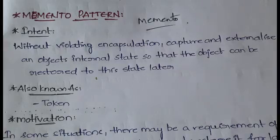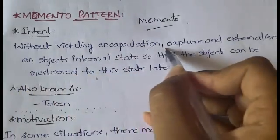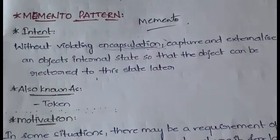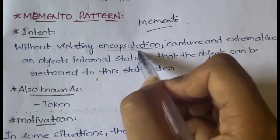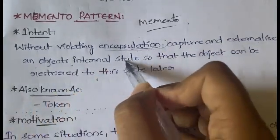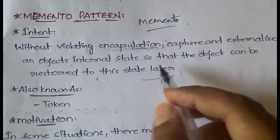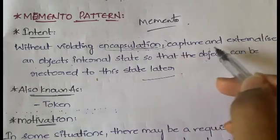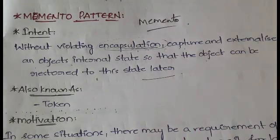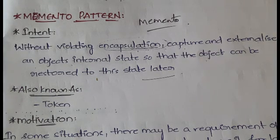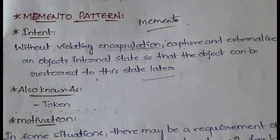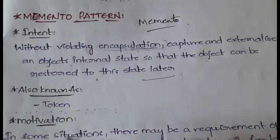What is the intent of the Memento pattern? Without violating encapsulation — meaning binding together methods and data — the intent is to capture and externalize an object's internal state so that the object can be restored to that state later. We need to keep capturing the state of the object so that whenever it is required, it can be reused. This Memento pattern is also known as Token.